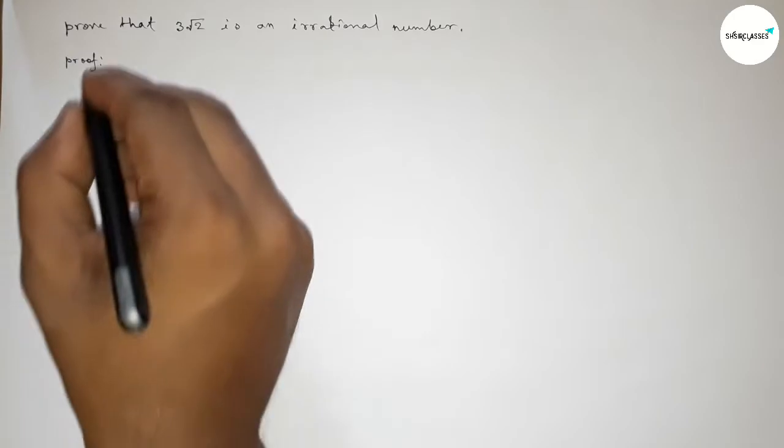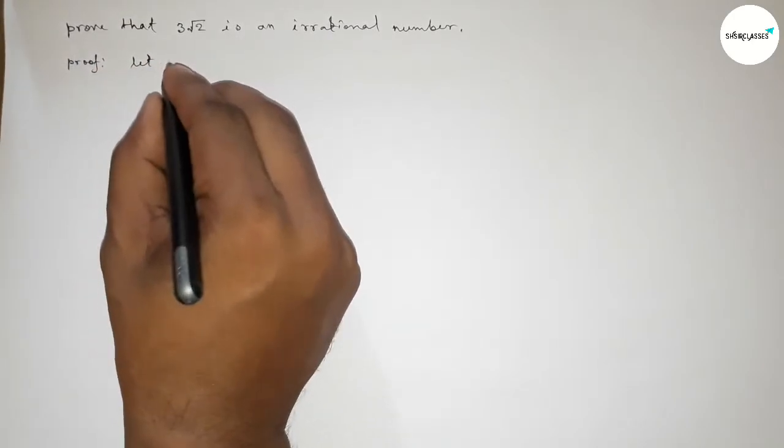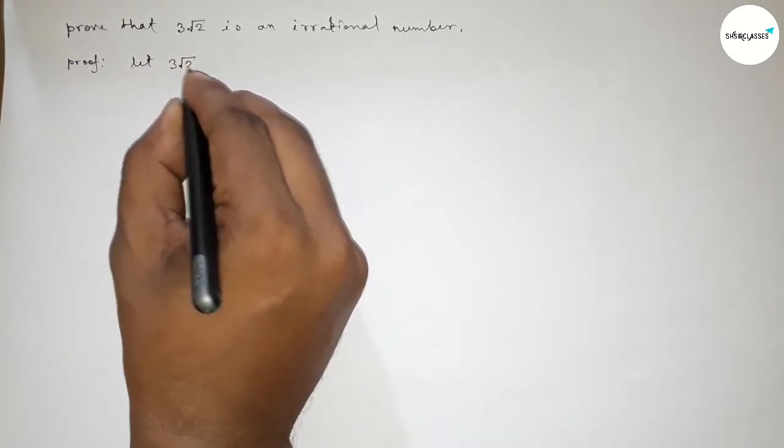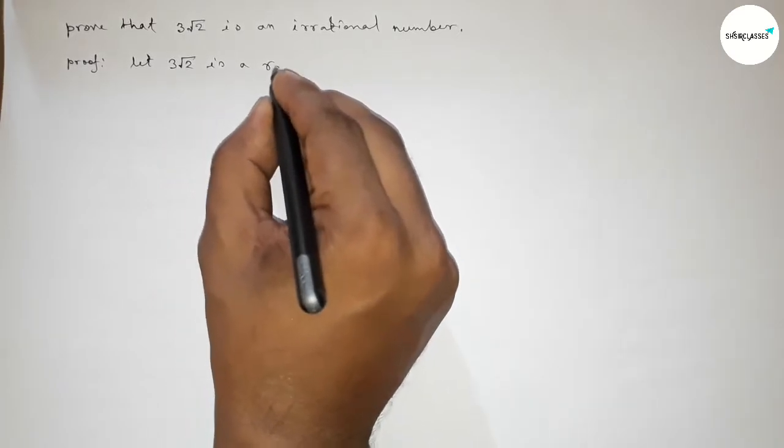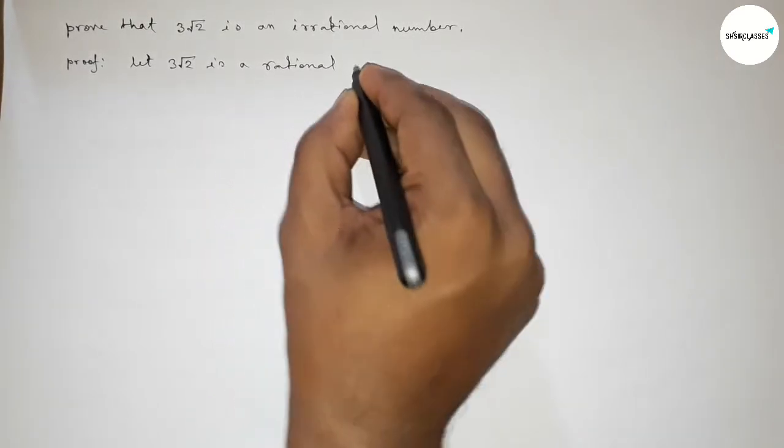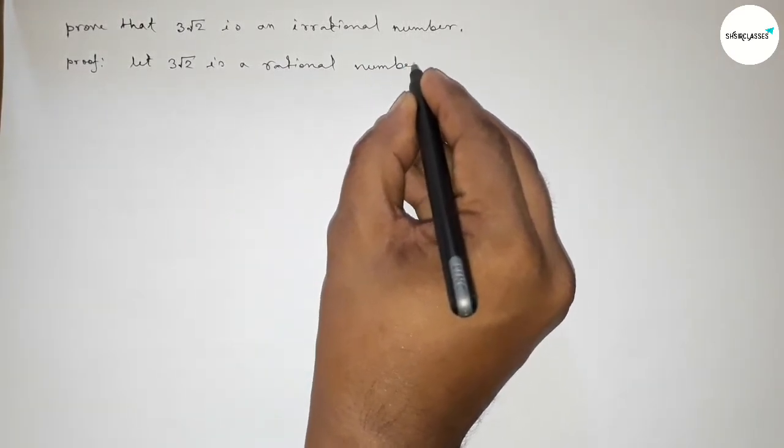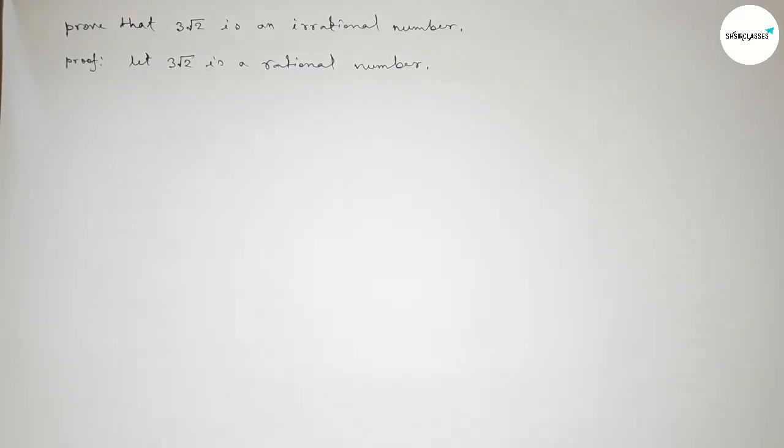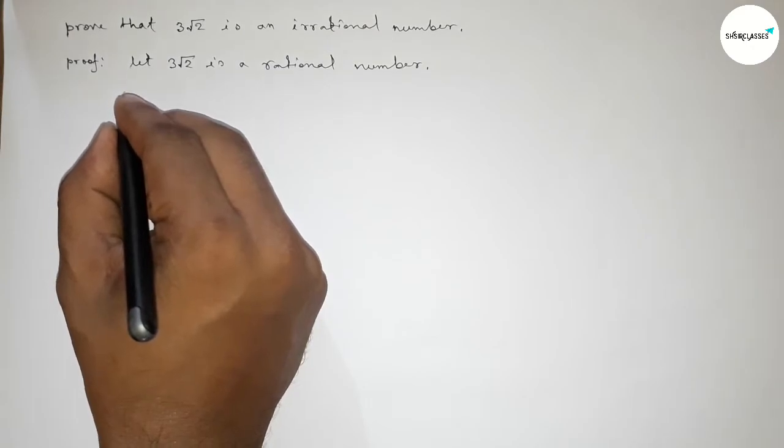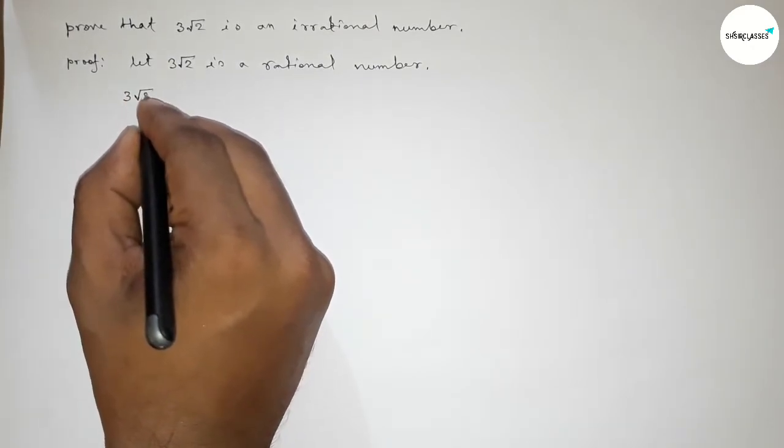First of all, let us assume that 3 root 2 is a rational number. So taking 3 root 2 is a rational number, by the definition of rational number we can write 3 root 2 equal to p by q form.